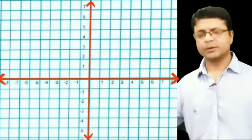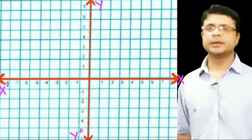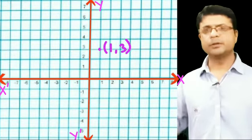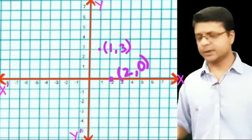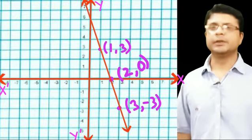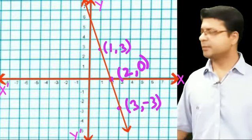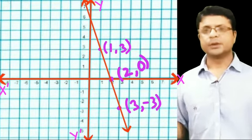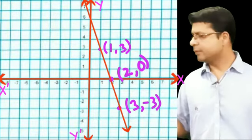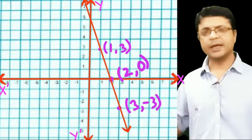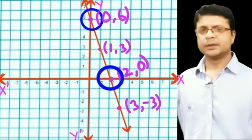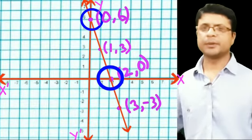We draw the x-axis and y-axis and plot all three points: (1, 3), (2, 0), and (3, −3). Joining them gives a straight line. The line intersects the x-axis at (2, 0) and the y-axis at (0, 6). These are the coordinates for the second part of the question.